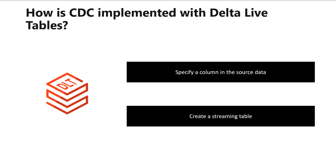Delta Live table propagates the appropriate sequencing value to the start_at and end_at columns of the target table. There should be at most one distinct update per key at each sequencing value, and null sequencing values are unsupported. To perform CDC processing with a Delta Live table, you first create a streaming table and then use an APPLY CHANGES INTO statement to specify the source, key, and sequencing for the change feed.